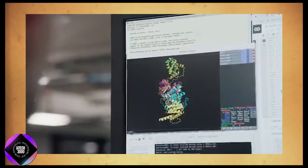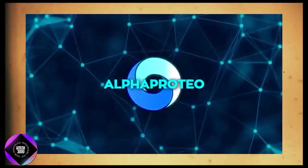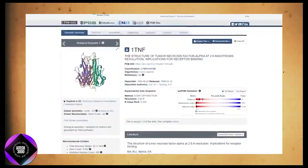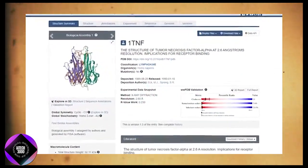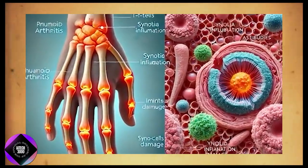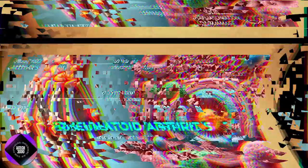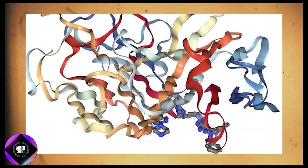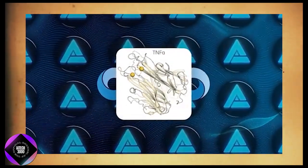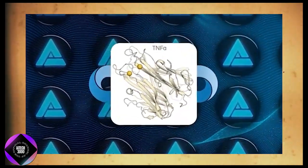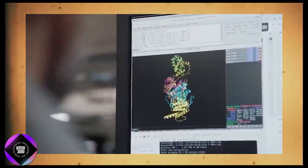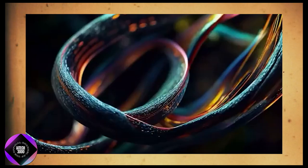However, the technology isn't perfect just yet. For example, AlphaProteo couldn't successfully design a binder for TNFA, a protein associated with autoimmune diseases like rheumatoid arthritis. But to be fair, TNFA is notoriously difficult to target and the team specifically chose it to test the system's limits. So while it's not a win, it shows that they're pushing the AI to improve.